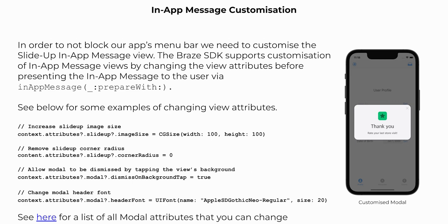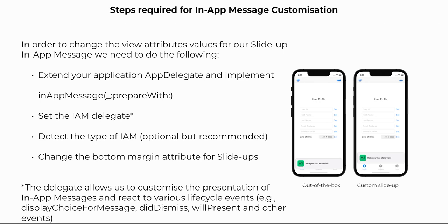A full list of attributes that you can change for in-app message views is available in our documentation. There are several steps required to customize an in-app message. We first need to extend our application's app delegate and implement the in-app message prepareWith method. We then need to set our in-app message delegate. The delegate allows us to customize the presentation of in-app messages and react to various lifecycle events — for example, display choice for message, did dismiss, will present, and other events. We then need to detect the type of in-app message, which is optional but recommended. And finally, we want to change the bottom margin attribute for slide ups.